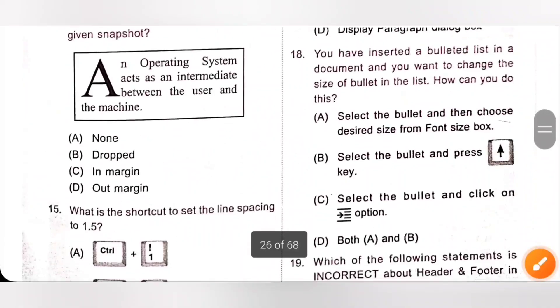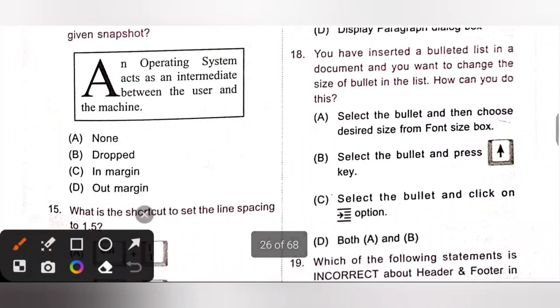18th: You have inserted a bulleted list in a document and you want to change the size of bullet in the list. How can you do this? To change the size of bullet in the list, we have to select the bullet and then choose the desired size from font size box. Option A is the correct answer.